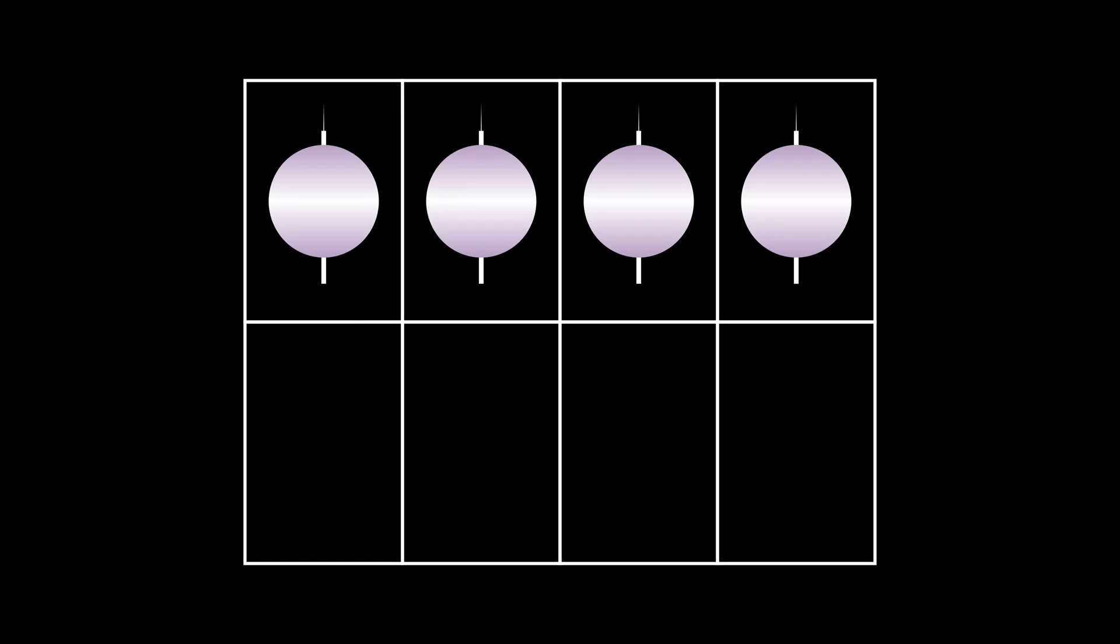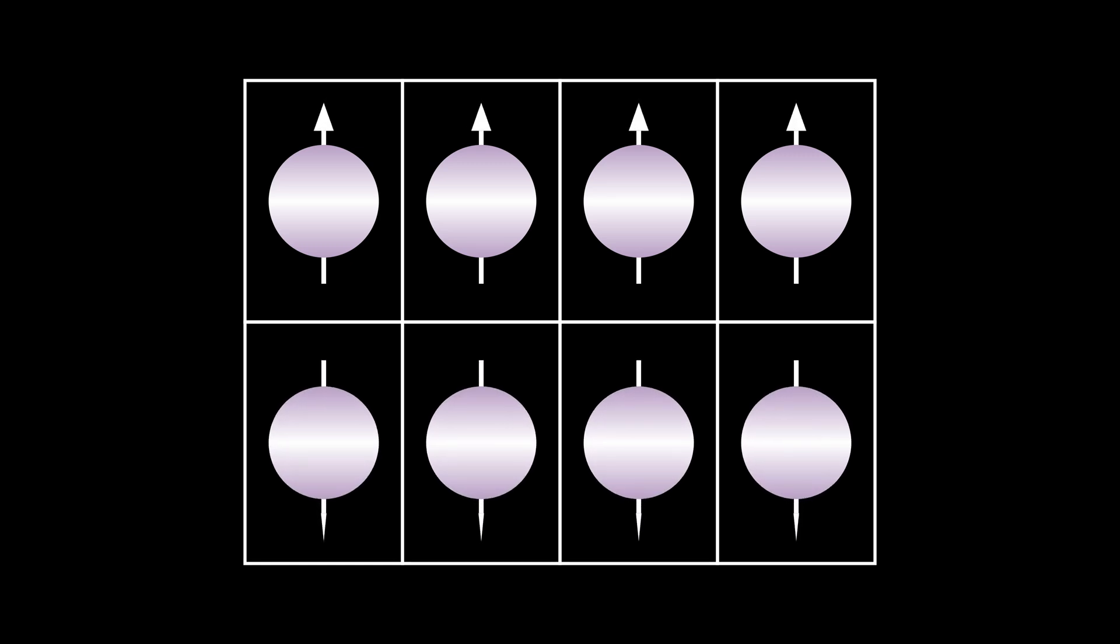As electrons fill up the energy levels or shells in the atom, quantum mechanics dictates that you can at max only have half of the total electrons in that level or shell spinning one way. So once you fill up half of the shell, the rest of the electrons can't have their spin in that direction. They must be opposite now.